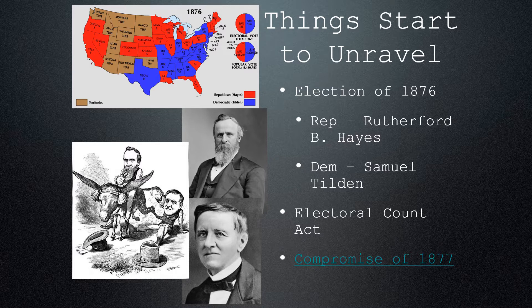The Democrats said, fine, Hayes can be president, but you have to get federal troops out of the South. We want Reconstruction to be over, we want the troops out of our states. There were still troops in Louisiana and South Carolina. So partisan violence doesn't happen — you don't have fights breaking out over who's going to be president — but Black civil rights are sacrificed. African Americans are not going to get the rights that it looked like they were going to get after the Civil War. The Republican Party abandons racial equality, and we're going to see almost 100 more years of segregation and laws that really prevent Black Americans from getting equal rights.